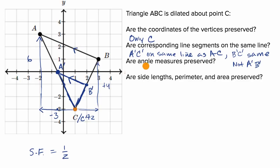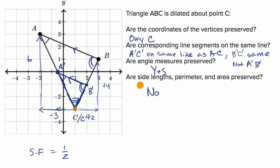Are angle measures preserved? We don't even need to check — angle measures are always preserved under dilation. That angle is equal to that angle, and corresponding angles are congruent. And of course, the angle at C is the same in both triangles. Are side lengths, perimeters, and area preserved? No — when doing a dilation, side lengths are not preserved, and therefore perimeter and area are not preserved either.